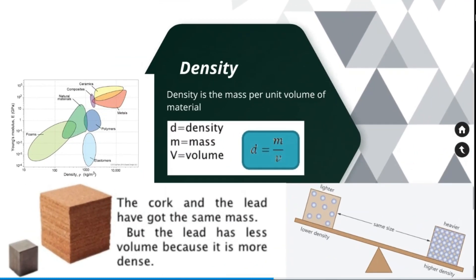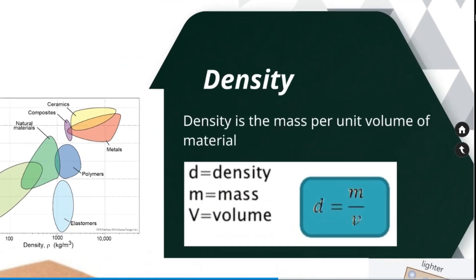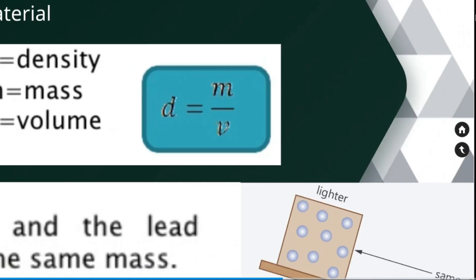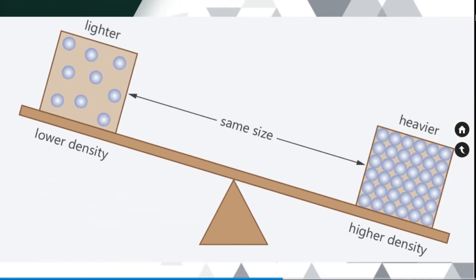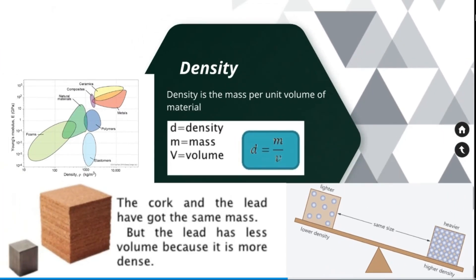Density. Density is the mass per unit volume of a material. Higher density material has higher mass and lesser volume. If you take a cork and lead of same mass, the volume of cork would be much higher than the lead. Because lead has higher density.